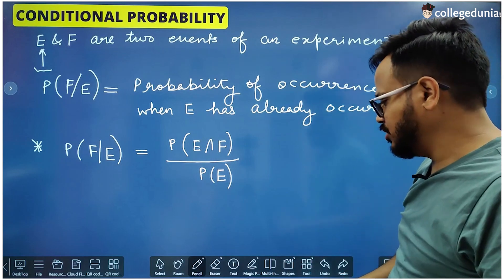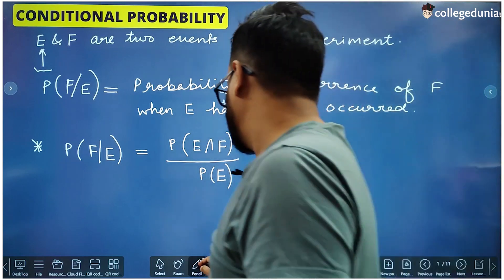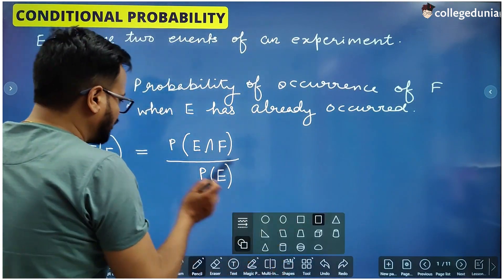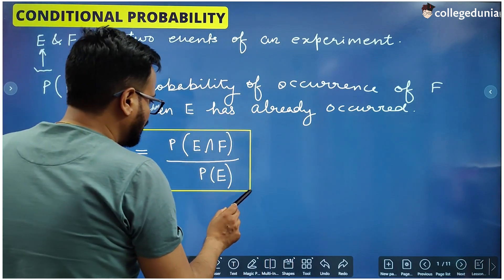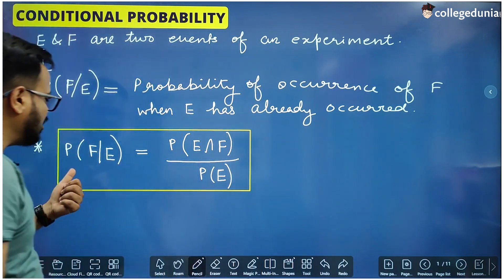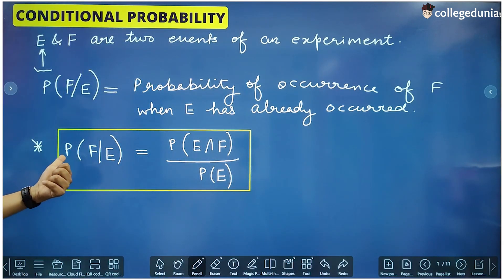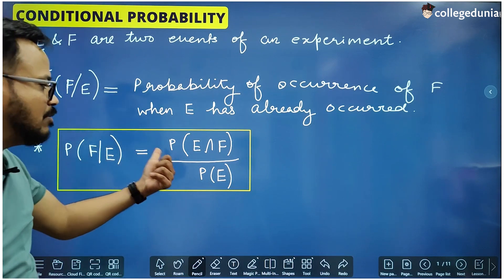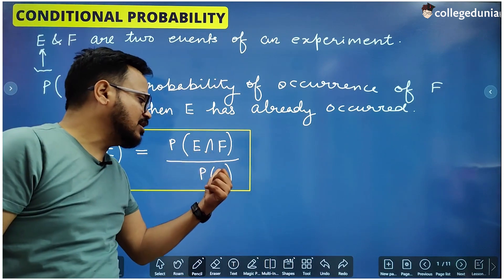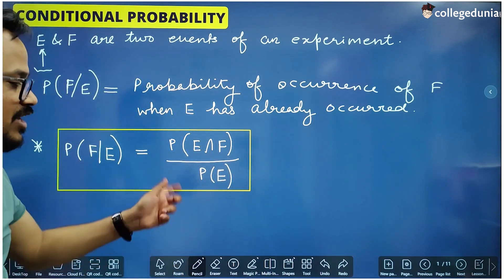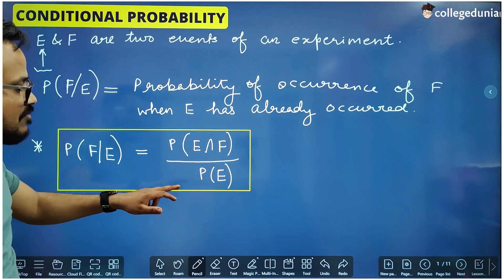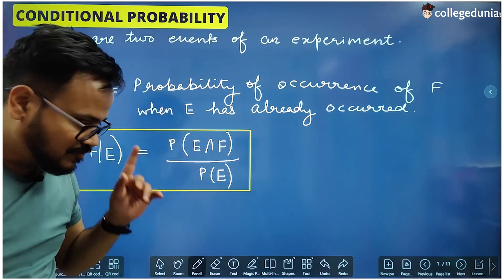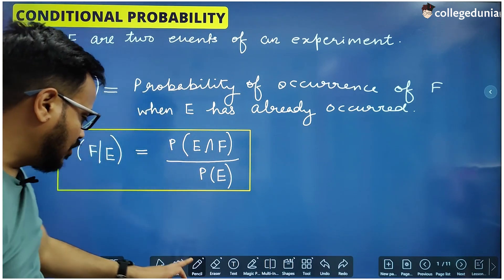We will see two or three examples so everything will be clear. Just focus on the formula for now: the conditional probability of occurrence of F when E has already occurred is P(E ∩ F) divided by P(E) — the probability of the event which has already occurred.